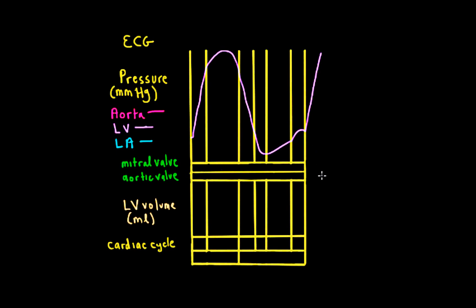If we add in the aortic pressure, it's going to be falling and declining. It reaches the ventricle pressure, and at that point it's less than the ventricle pressure — it actually follows the same profile. There's a little small bump, and then there's the decline in aortic pressure again, and then it repeats.